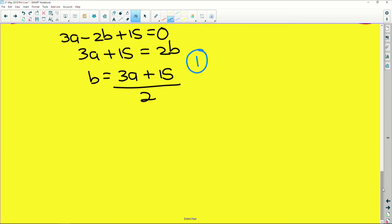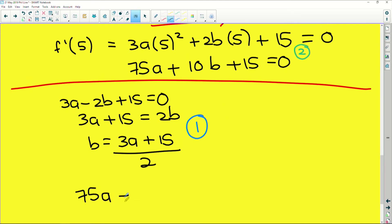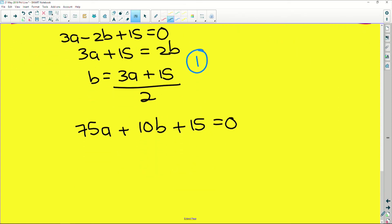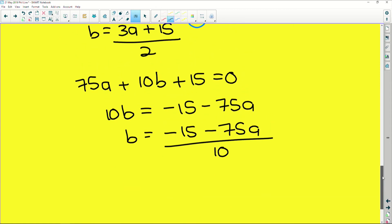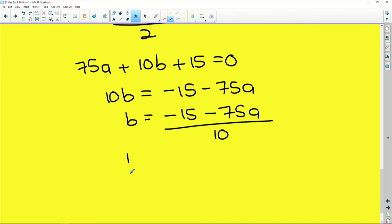Now if we look at our second equation here, we had 75a + 10b + 15 is equal to zero, which means that 10b is equal to -15 - 75a, which means that b is equal to (-15 - 75a) all over 10. But those are a lot of really big numbers with common factors in them. So if we take out a common factor, we can say that b is equal to, I'm going to take out a factor of five, so we get (-3 - 15a) all over 2. Okay, so that is the manipulation of our second equation.